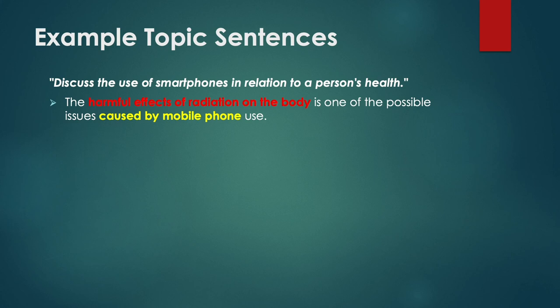The harmful effects of radiation on the body is one of the possible issues caused by mobile phone use. From this topic sentence we know the paragraph is discussing a problem of mobile phones in relation to health. The text in red tells us it will be about the physical problems caused to the body, and it links back to the question with the words in yellow: caused by mobile phones.